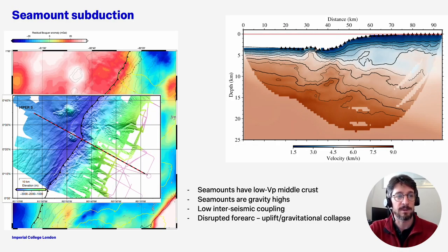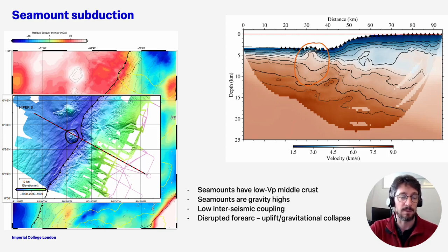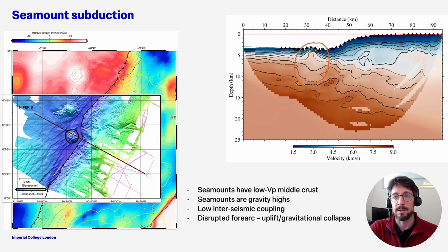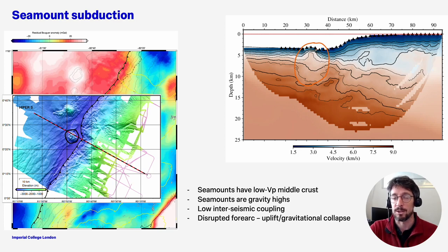So let's look at the seamounts first. We see from the topography on the left that one of the Atacames seamounts is about to be subducted — it's a few kilometers out from the deformation front. In the seismic tomography profile it shows a high-velocity upper crust contrasting with the sediments on either side, a low-velocity middle crust, and a thickened crust with increased crustal thickness.